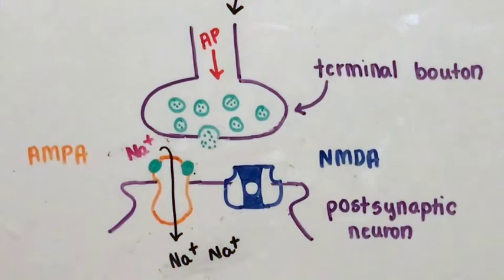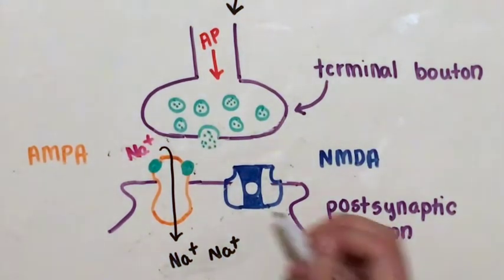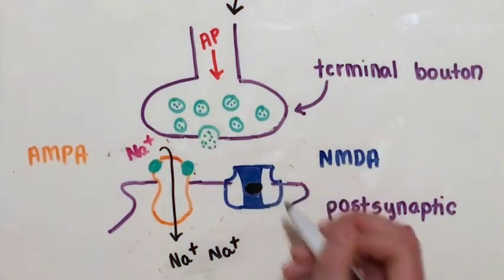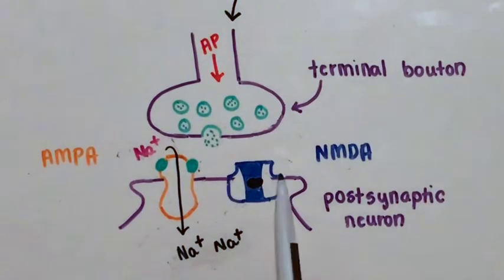Things would be completely different if ketamine was involved. Ketamine is an uncompetitive NMDA receptor agonist. It binds to NMDA and effectively blocks the pores so that glutamate can no longer bind.